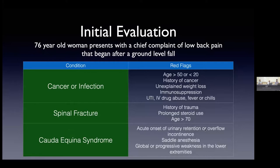Additional red flags include urinary dysfunction — whether inability to empty the bladder or overflow incontinence — loss of sensation in the saddle area, and progressive weakness affecting the lower extremities. All of those things are red flags that could indicate a potentially serious underlying problem.